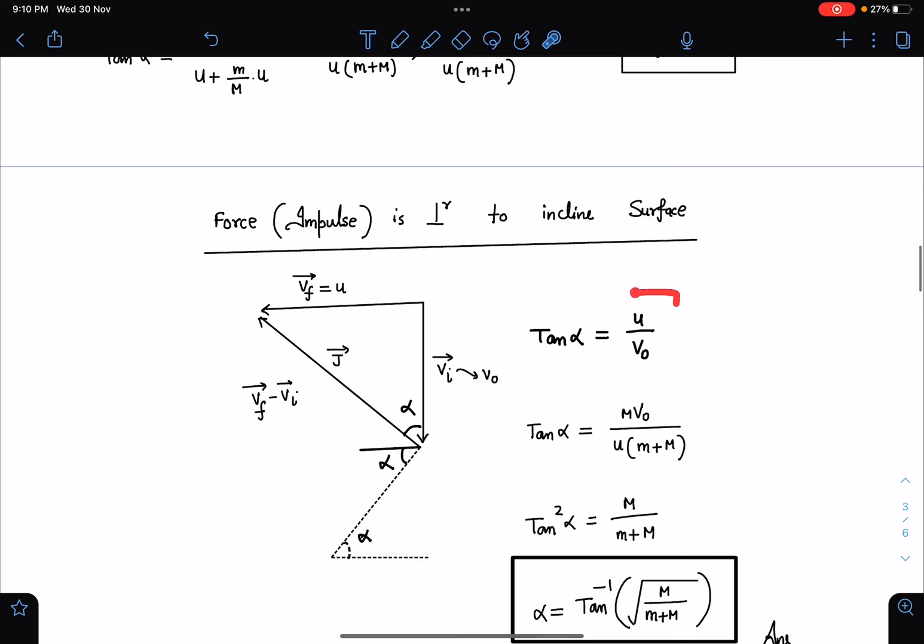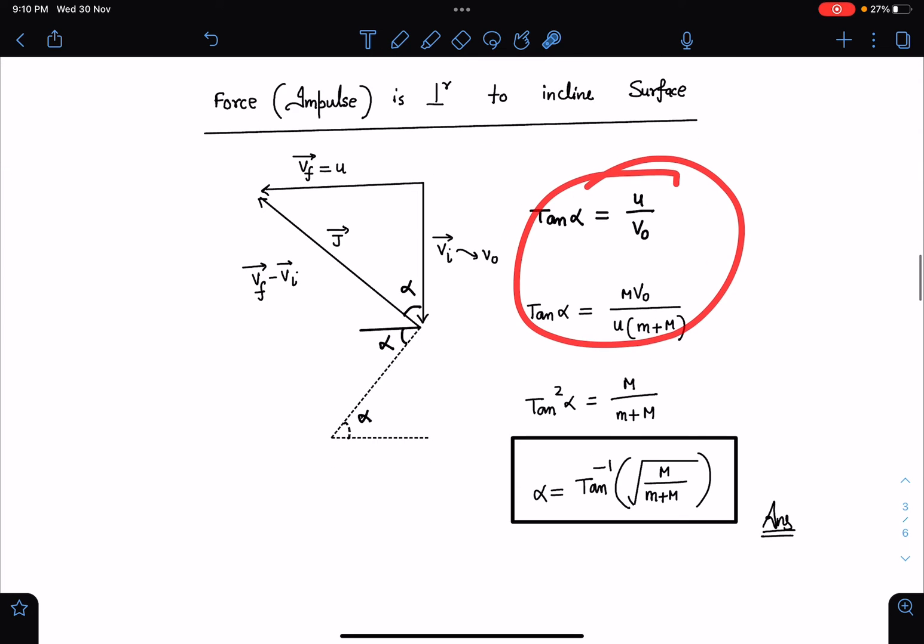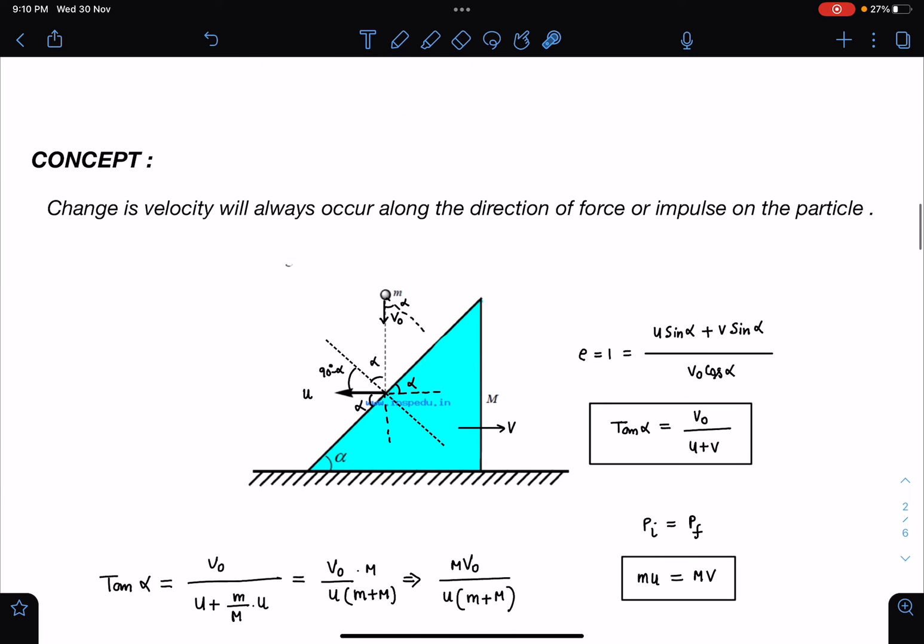Combining these values I am getting tan alpha times tan squared alpha equals capital M divided by (small m plus M), and alpha equals tan inverse of the square root of M over (m + M). It is such a nice problem and you can see this vector triangle will keep coming.